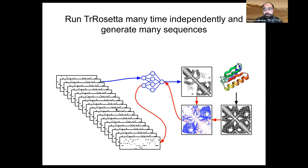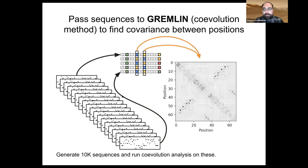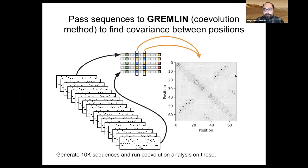We took those 10,000 sequences and ran them through a co-evolution algorithm like GREMLIN, asking which residue pairs are co-varying with each other. We saw something interesting: not all the residues that were in contact in the crystal structure were actually co-varying in the designed sequences. This supported the idea that the model sees a few key residues determining sheet-sheet or helix-helix pairings, but everything else is determined by some other aspect of the model.